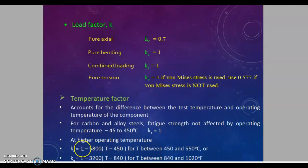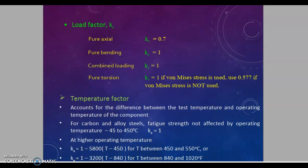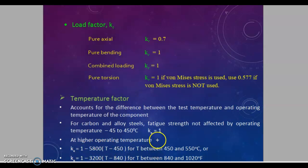So that total factor: ke equals 1 minus that factor. For temperatures below minus 45 degrees Celsius, ke will be 1. For temperature between 840 degrees Fahrenheit to 1020 degrees Fahrenheit, the temperature factor will be 1 minus 3200 times (t minus 840). This is the formula for the temperature factor.